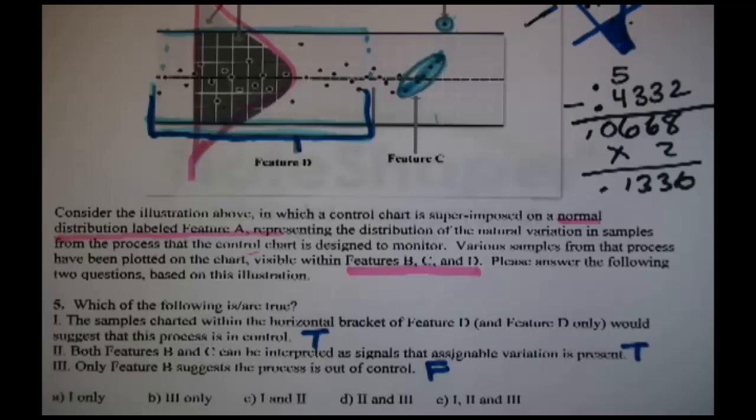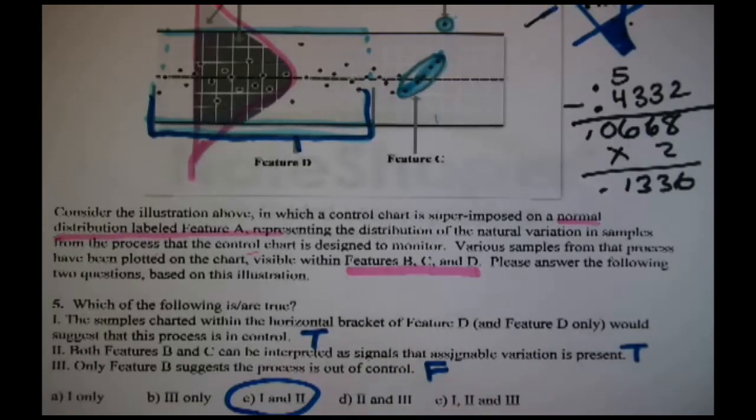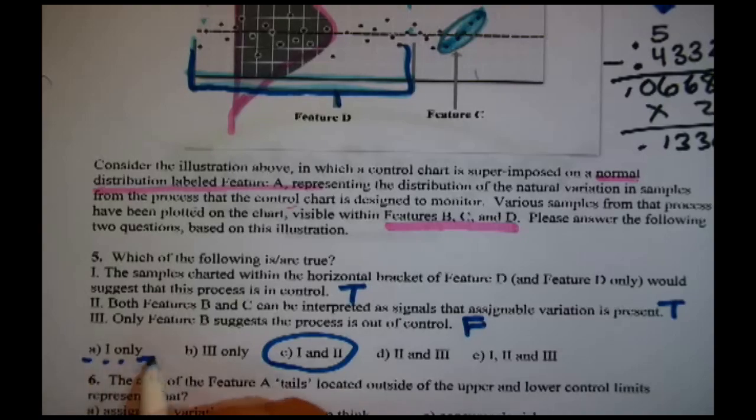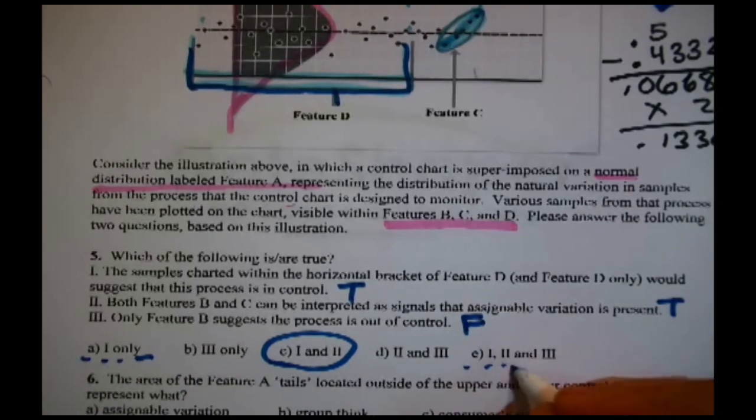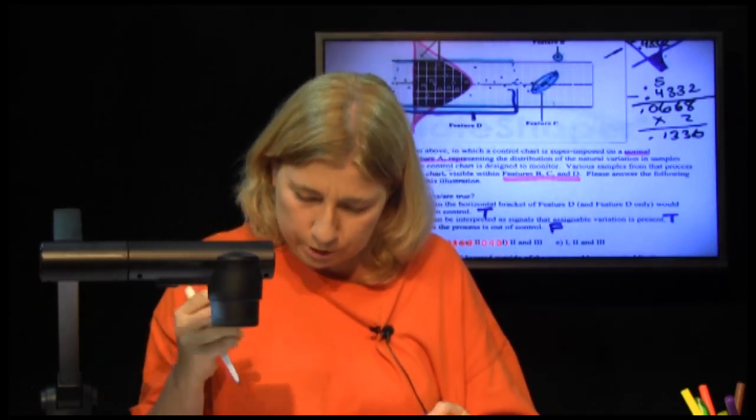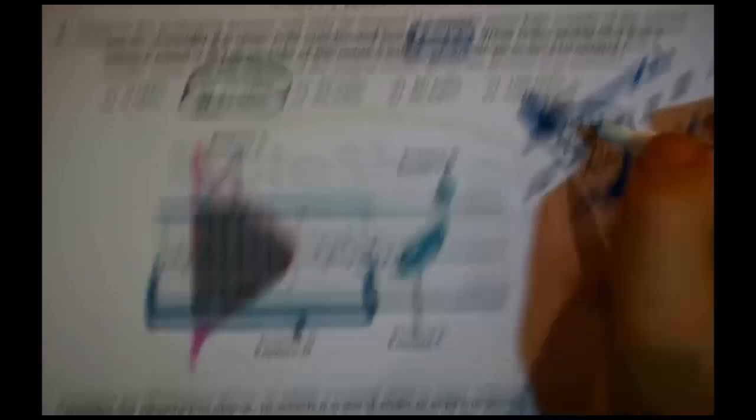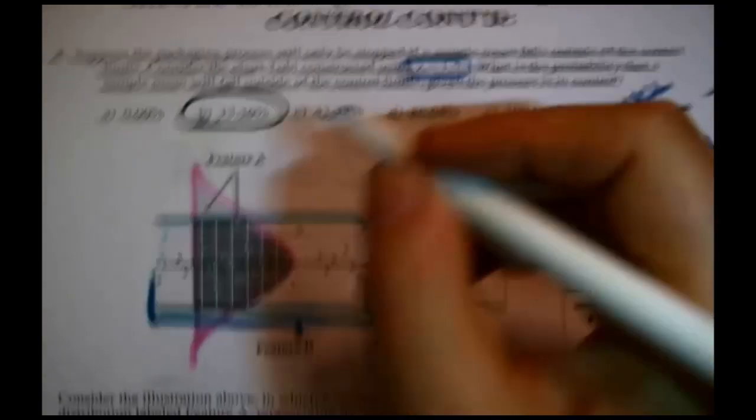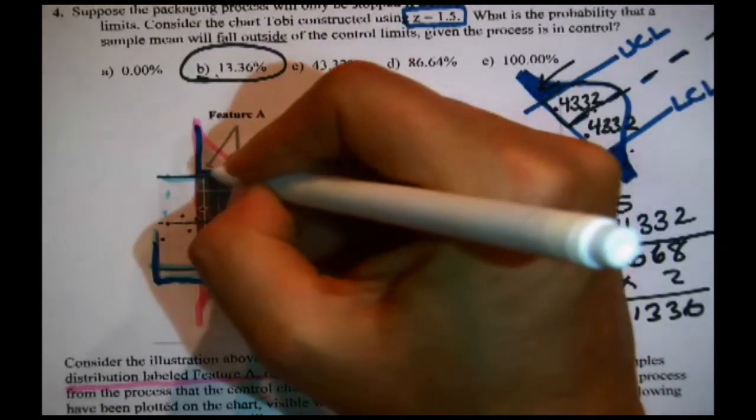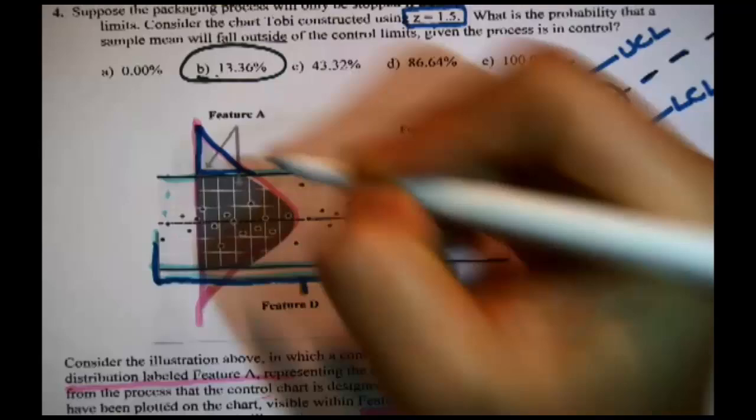Statement 3 is mutually exclusive of Statement 2. Notice that. Only one of these things can be true. Only Feature B suggests the process is out of control. Since we have declared Statement 2 correct or true, then we have to declare Statement 3 false or incorrect, because they both can't be true. So, the top two tested is true. So, that is one and two, meaning that that would be partial credit, and that would be partial credit. That's good. And then one last question.